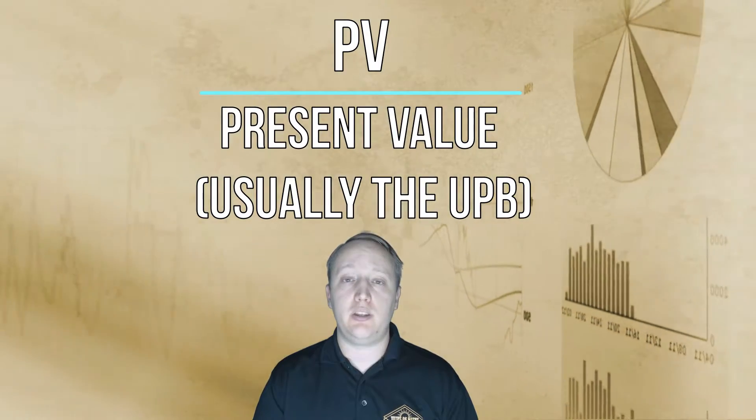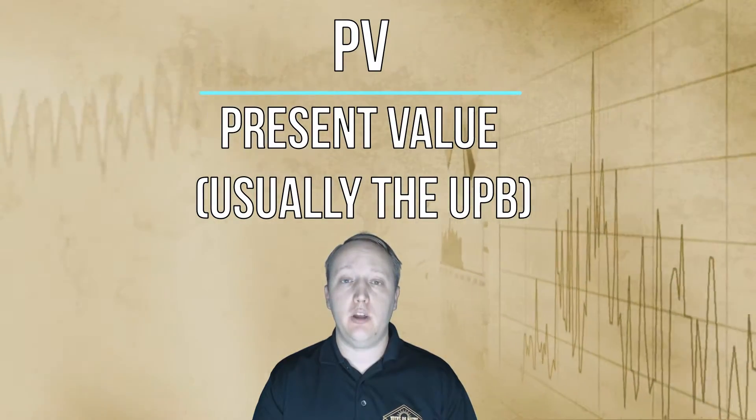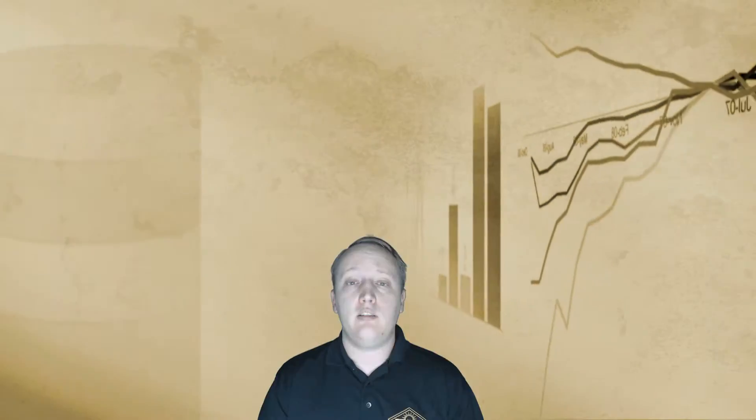The present value is just what the current balance is for the note, and so it needs to be negative so it subtracts from it. Otherwise, you're not going to get a correct calculation.